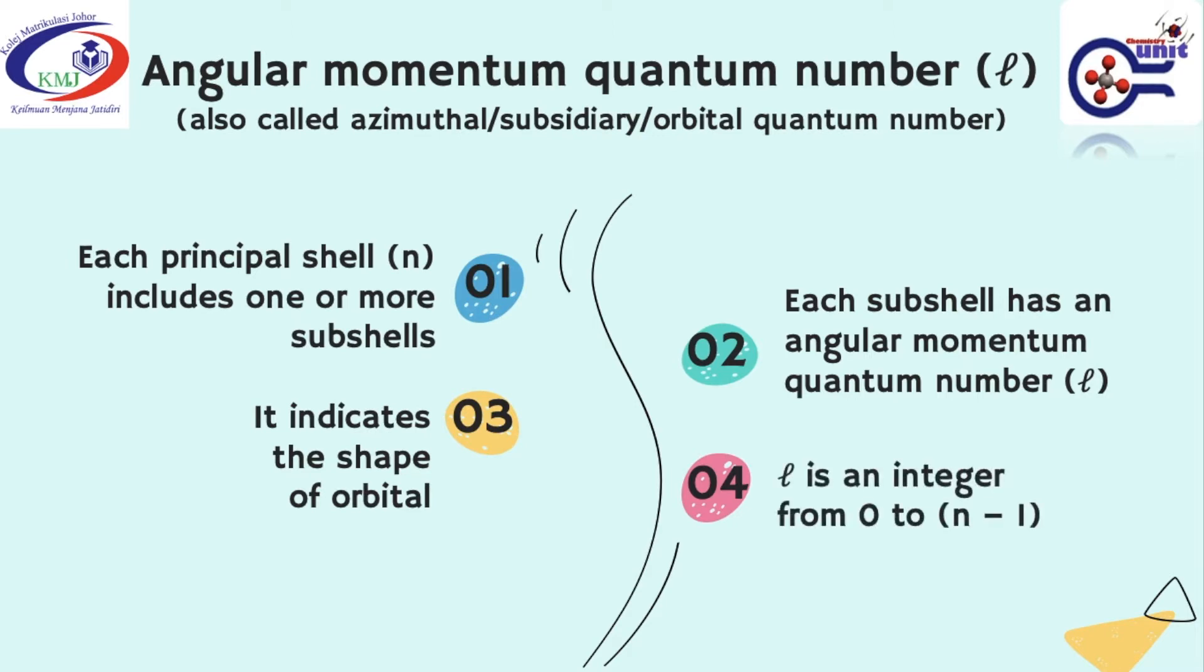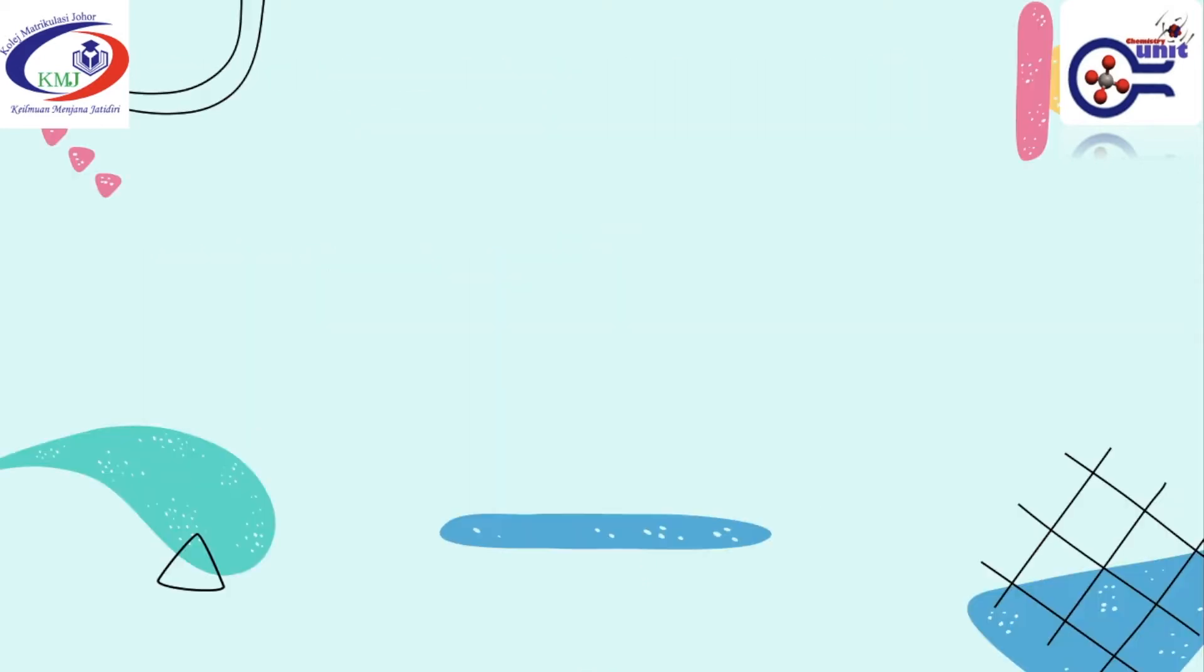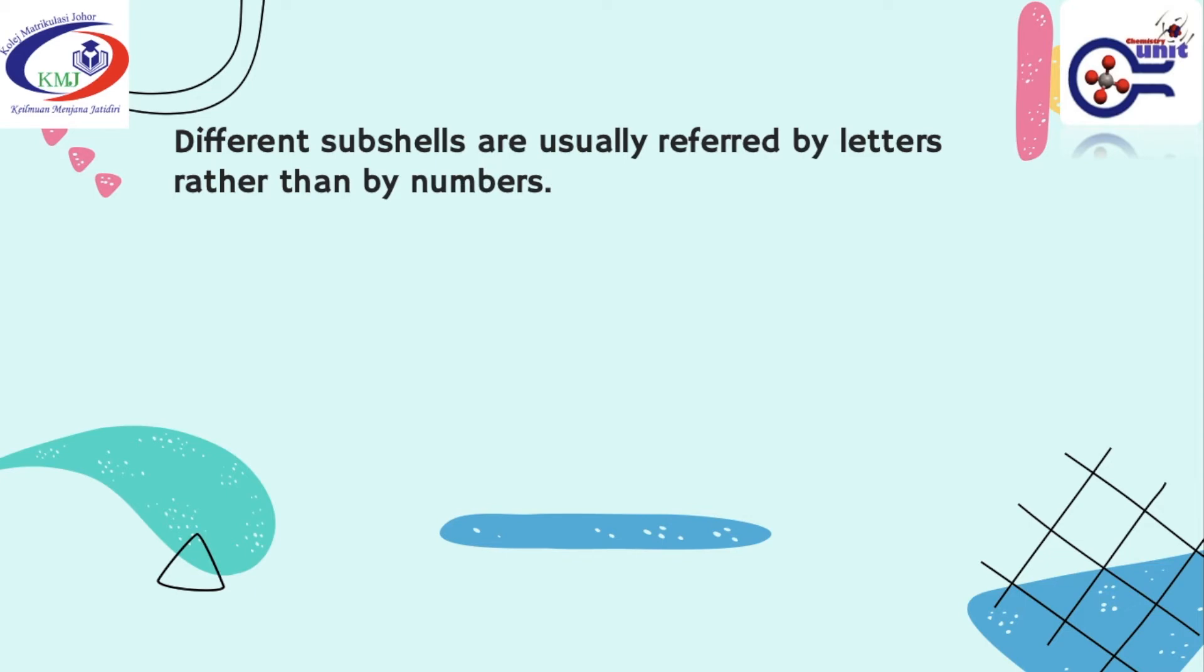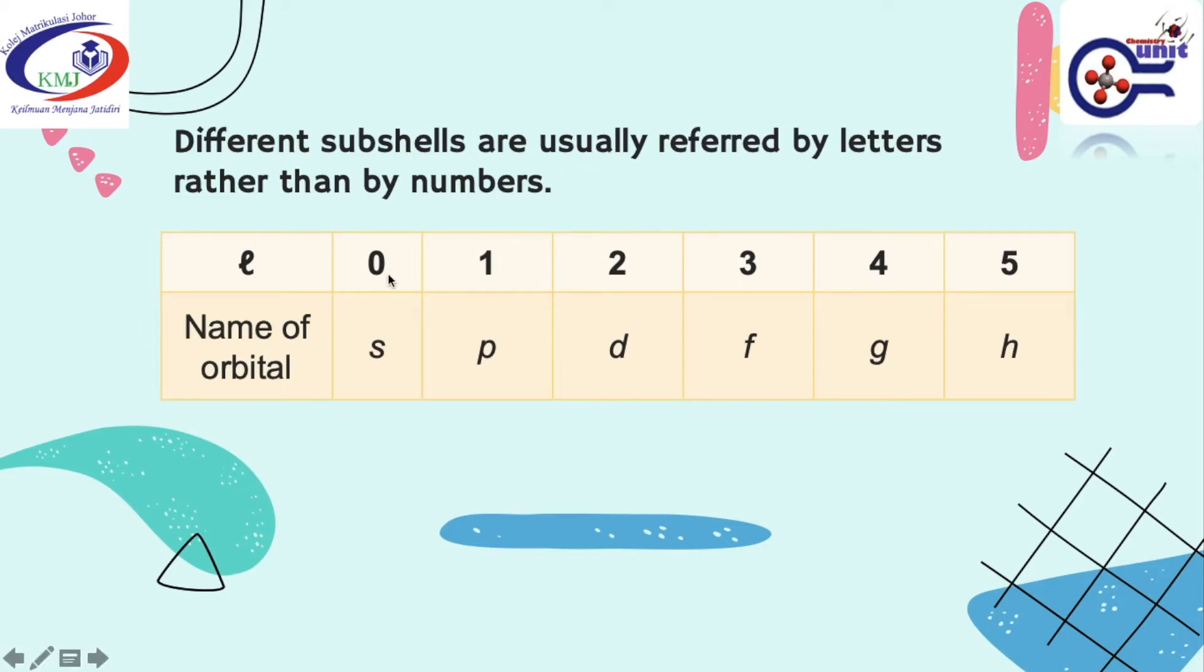L, or Angular Momentum Quantum Number, is an integer from 0 to n-1, where n is the principal quantum number. Different subshells are usually referred by letters rather than by numbers. So for the value of L equal to 0, the name of orbital is S-orbital. When L is equal to 1, it is P-orbital. When L is equal to 2, it is D-orbital and so on.